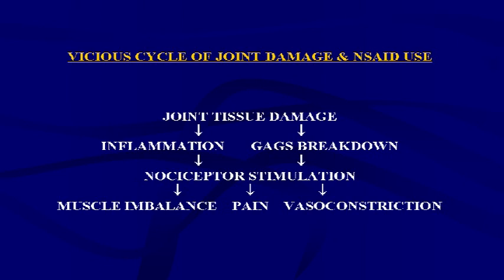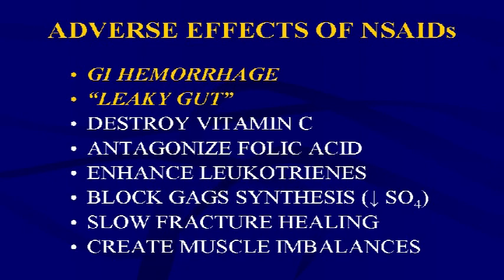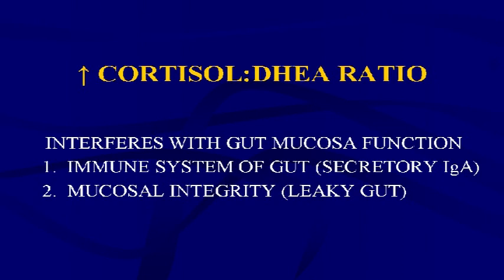Vasoconstriction from NSAID use is useful at initial injury but doesn't allow tissues to heal properly — this is the first part of a vicious cycle. Muscle imbalance leads to altered joint mechanics, which furthers joint damage, slows healing, and makes the person more susceptible to further injury, feeding back into the beginning of this vicious cycle.